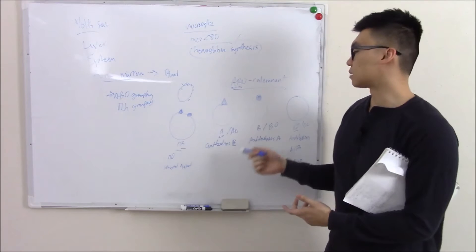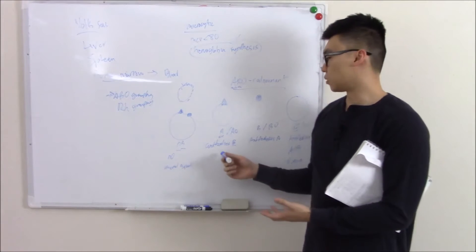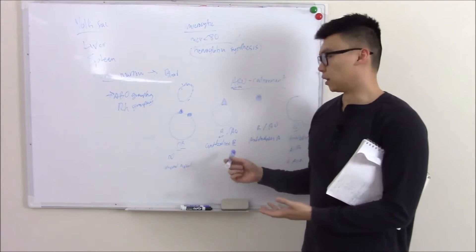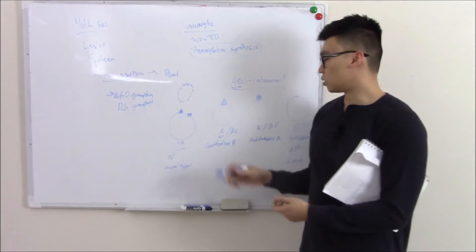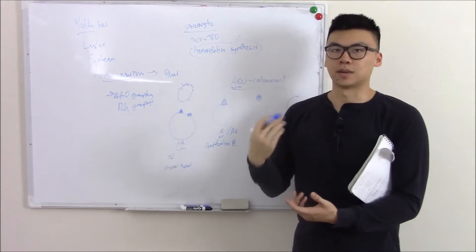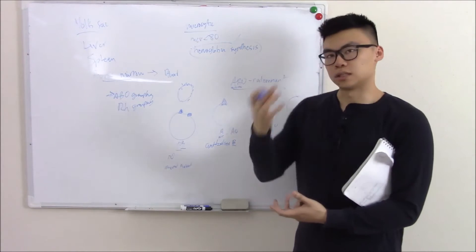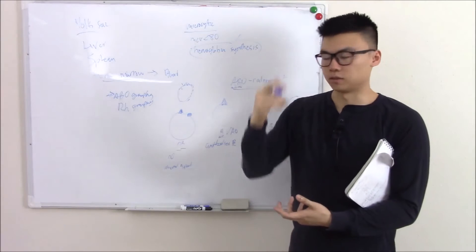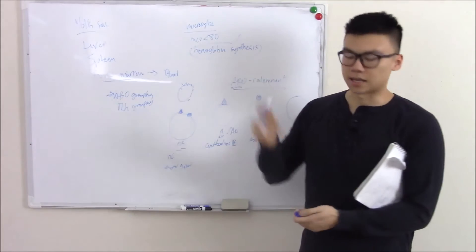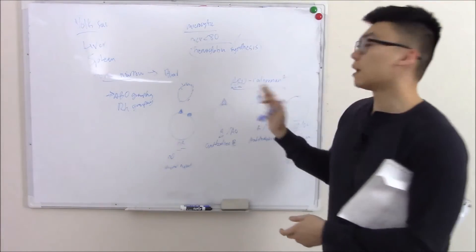Something that's been asked — not necessarily USMLE-related — is why does a patient with A blood develop antibodies to B if they've never been exposed to blood? It's because when you're born, you don't have anti-B antibodies, but the B antigen isn't unique to blood — it's also seen in bacteria and food products. So once a baby starts feeding and gets exposed to bacteria and food products, they develop the antibody to B. That's just a side note.